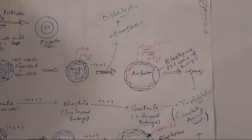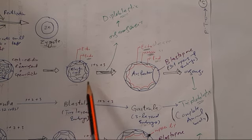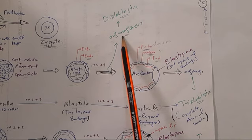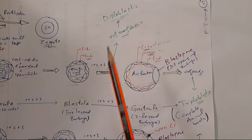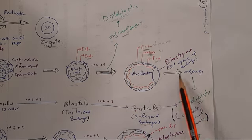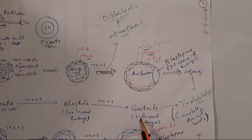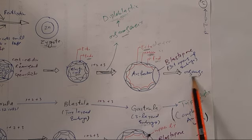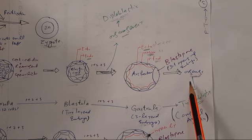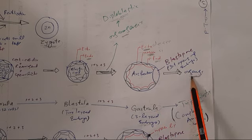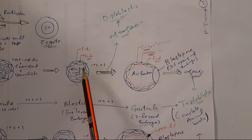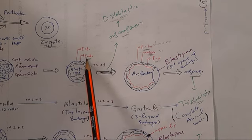On the basis of arrangement of cells in the body wall, animals are classified into two groups: diploblastic and triploblastic animals. In some animals, after the blastula — the two-layered embryo — is formed, organogenesis begins directly. These are called diploblastic animals. In most animals, after the gastrula — the three-layered embryo with ectoderm, mesoderm, and endoderm — organogenesis occurs. These are called triploblastic animals.